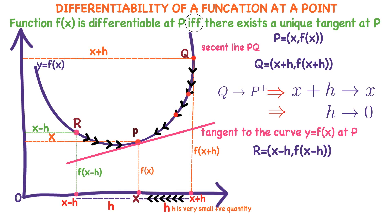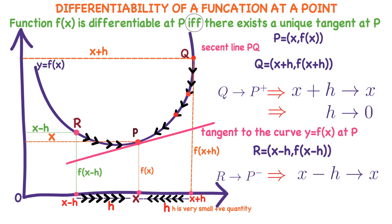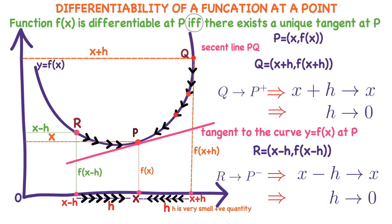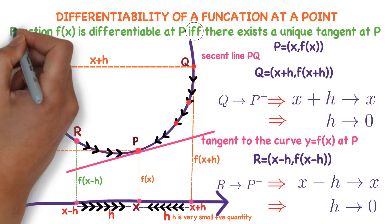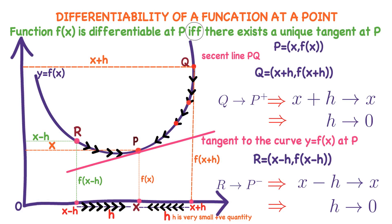What we observe here: when Q approaches P from the right and R approaches P from the left, the secant line becomes tangent to the curve y equals f of x at point P. That means there exists a unique tangent to the curve at point P. Here, x minus h is approaching x, which means h is approaching 0. So we conclude: a function f of x is differentiable at a point P if there exists a unique tangent to the curve y equals f of x at point P.